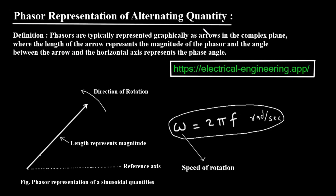If you've ever looked at AC circuits, you've seen sine waves and cosine waves, and the math can sometimes get a little complicated, especially when you have to add or subtract them. Phasors are a brilliant mathematical tool that allows us to simplify these complex, time-varying quantities into simple, static vectors or arrows that we can work with much more easily.